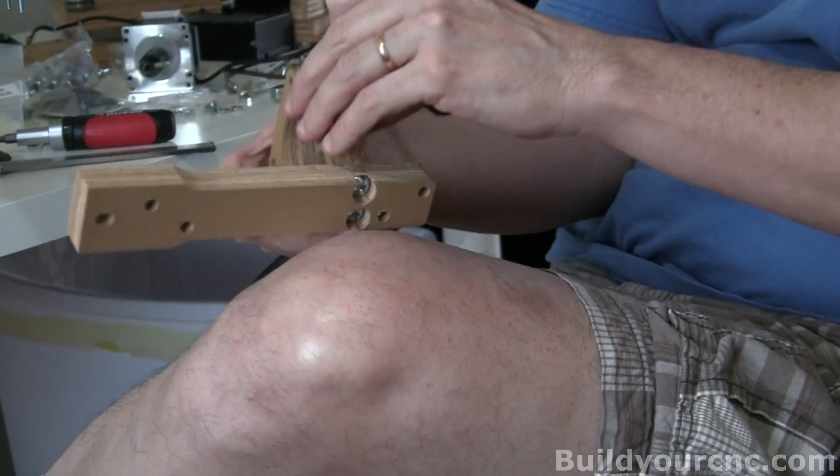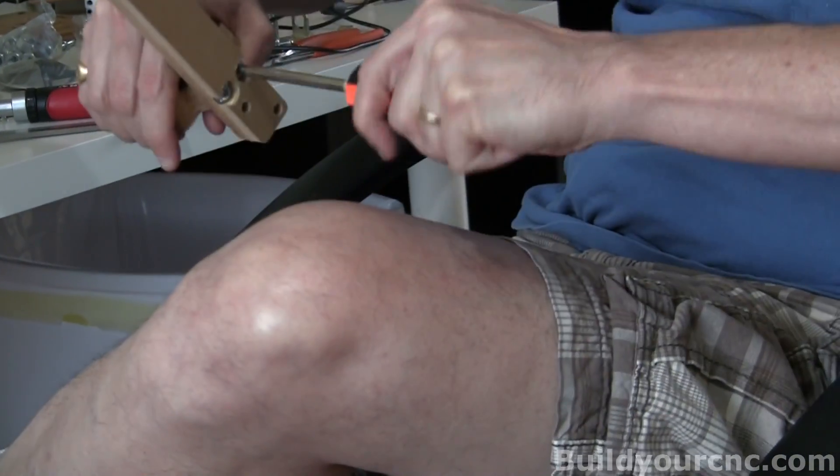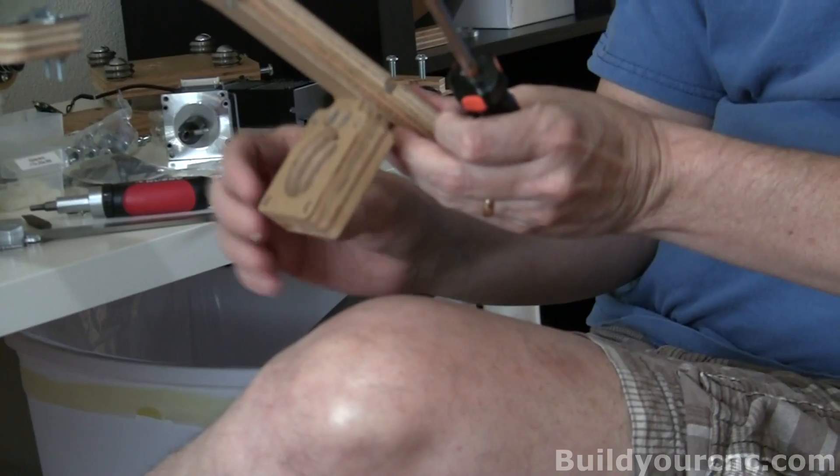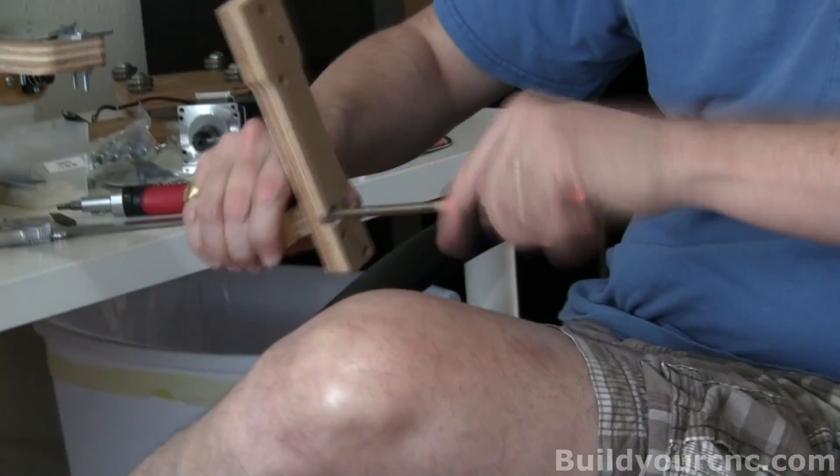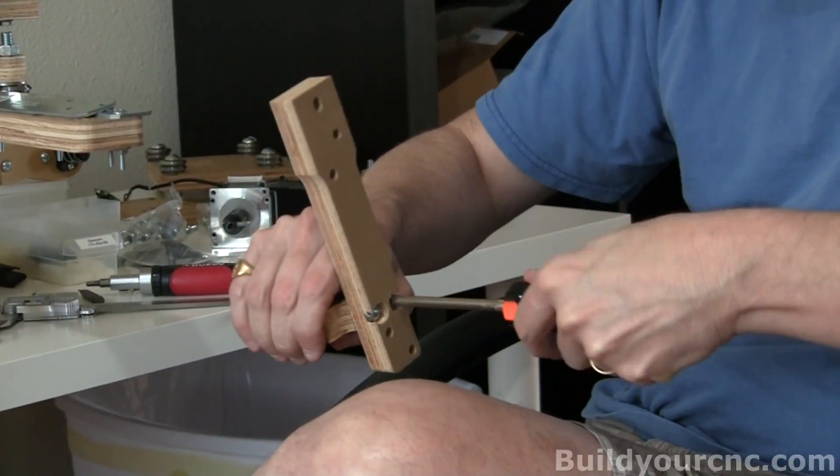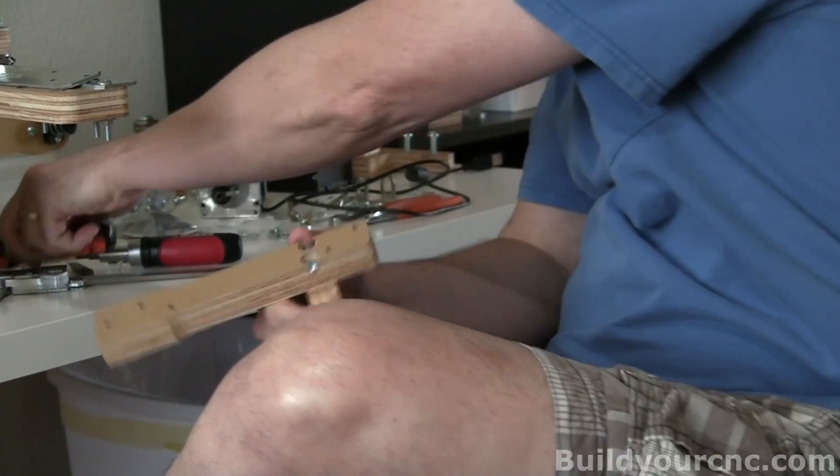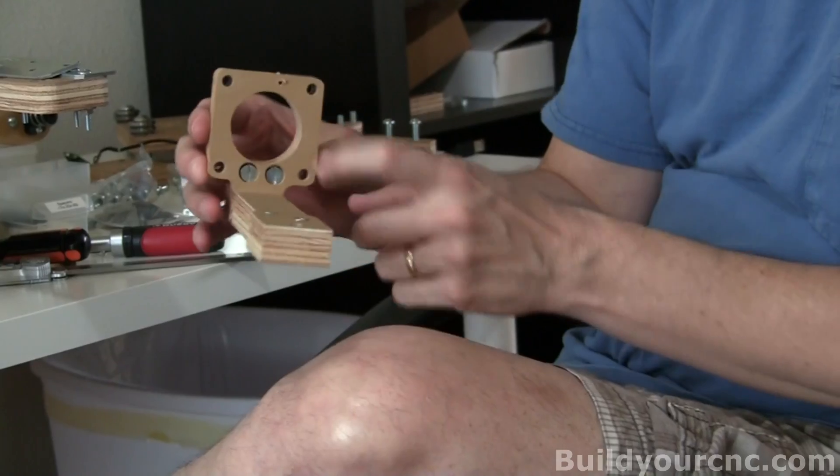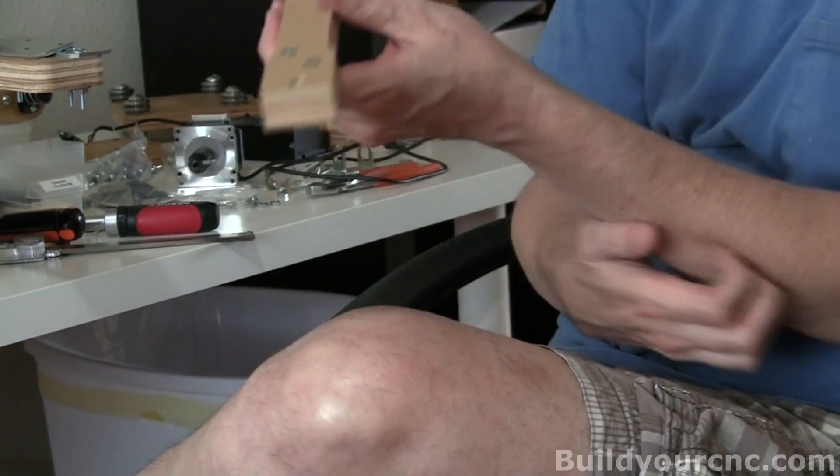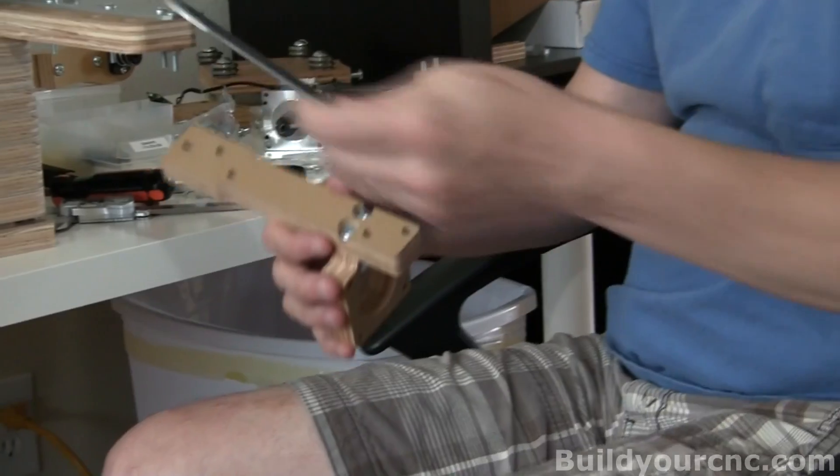This is your sort of end effector at the end. You want to try to make it as square as possible. When you start hearing crackling, it's the time to stop. Okay, so that's really, really solid. If you want, you can add a few drops of glue here to tighten up everything.